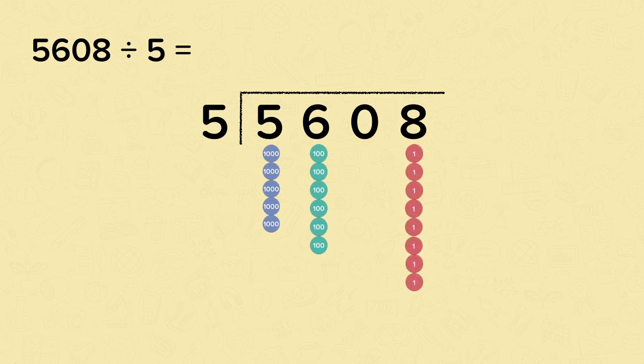Let's start by dividing the first digit of the dividend by the divisor. So that's five divided by five. And that's one. But remember, actually what we've done is five thousand divided by five. So this one represents one thousand. Now onto the next digit.